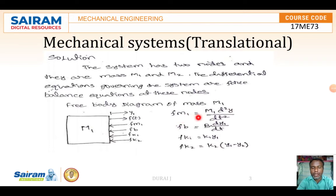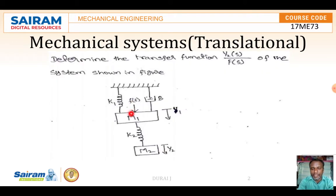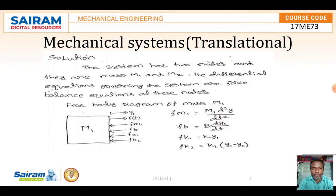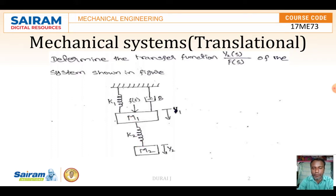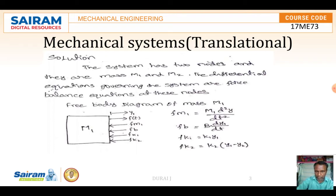The equations for M1 are: F_M1 = M1·(d²y1/dt²), F_B = B·(dy1/dt), F_K1 = K1·y1, and F_K2 = K2·(y1 - y2). Note: for M1 we take (y1 - y2), and for M2 we would take (y2 - y1) — this is an important point to remember.